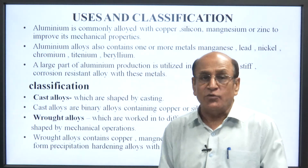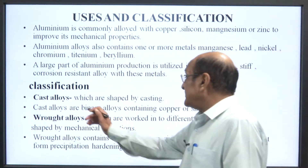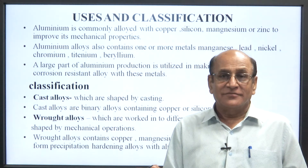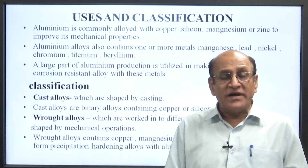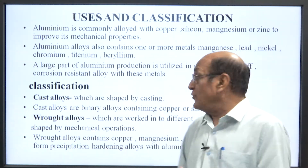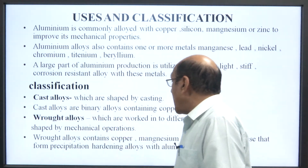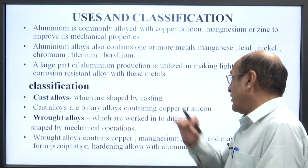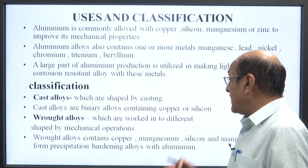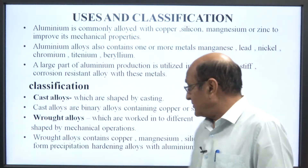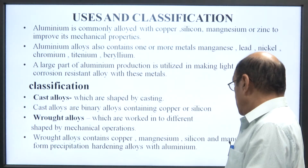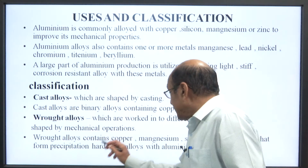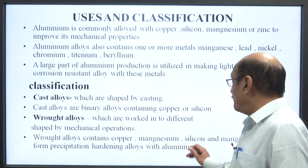Now come to the classification of aluminium. First is cast alloys, which are shaped by casting. Many instruments and equipments are cast by aluminium. Cast alloys are binary alloys containing copper and/or silicon. Wrought alloys are worked into different shapes by mechanical operations. Wrought alloys contain copper, magnesium, silicon, and manganese, and form precipitation hardening alloys with aluminium.